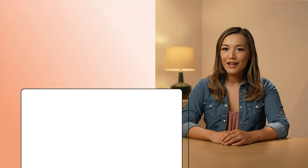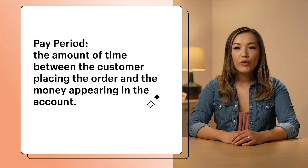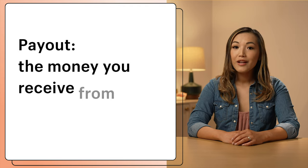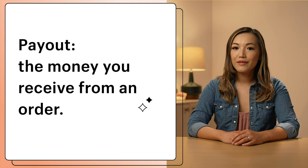Payout periods can be complicated, but I'm going to break it down for you and simplify everything. To start, a couple of quick definitions. When I say pay period, I'm referring to the amount of time between the customer placing the order and the money appearing in your account. Your payout is the money you receive from the order. It's paid every business day as soon as these funds are available, but that doesn't mean you'll get the money the next business day after you receive your order.